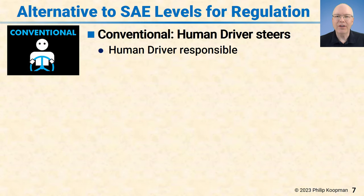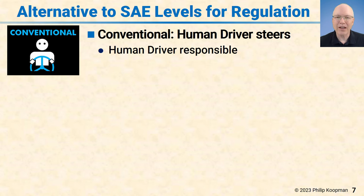We've defined what a duty of care is and said it might belong to the computer driver or the human driver. So now we have to figure out how to assign which one has it and when — because if there's confusion, we haven't really fixed the problem. To do this, we need an alternative to the SAE levels to be used for regulation, using four modes. The first is conventional: if a human driver is continuously doing sustained steering, the human driver is responsible. Things like lane-keeping assistance that nudges you back in the lane — that's not sustained steering by a computer. We're just talking about the human driver steering — that's conventional, and the human driver is responsible.